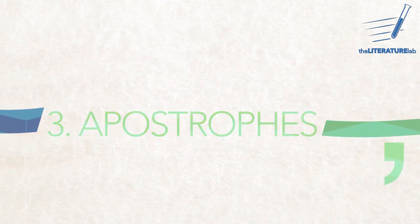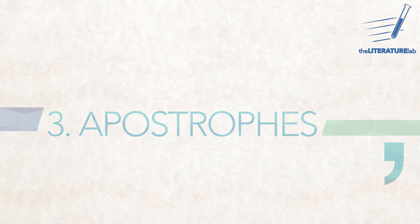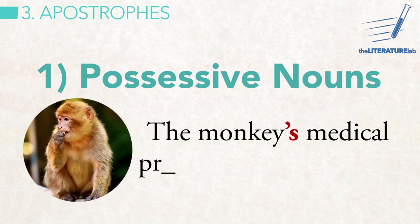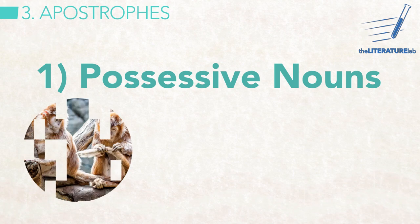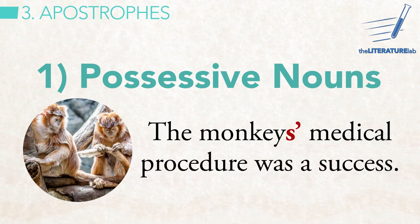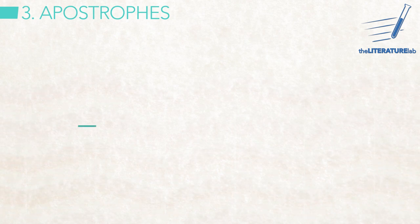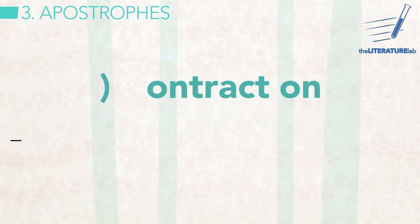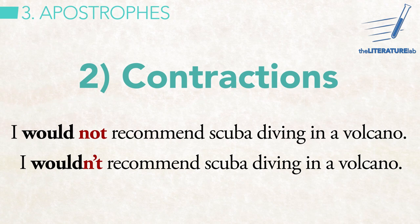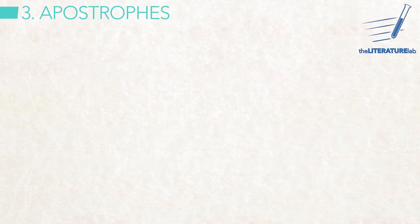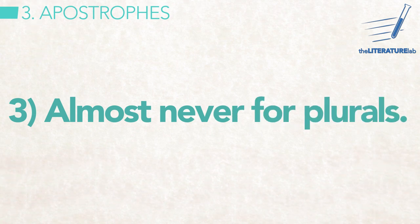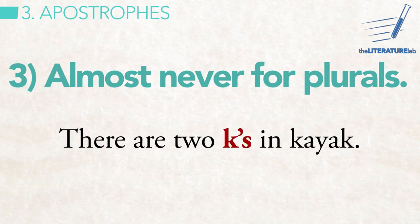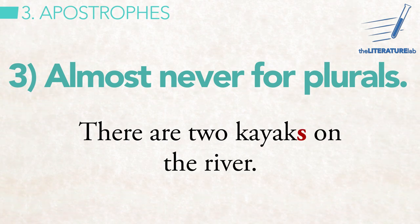Apostrophes are another often abused punctuation mark. Just remember three scenarios. If something belongs to a noun, use an apostrophe-s. But watch out for plural nouns ending in s — they take apostrophes after the s. Contractions are rare in academic writing, but you still need to understand them; their apostrophes replace missing letters. Using apostrophes for plurals is a capital crime against grammar — don't be one of those people.